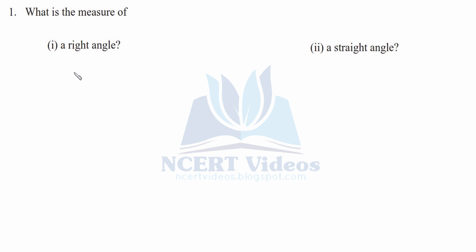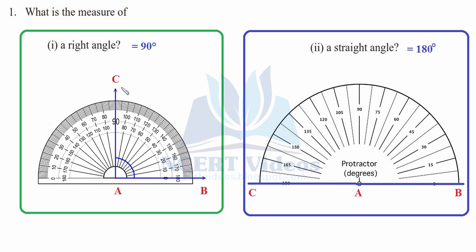First, what is the measure of a right angle, and second, what is a straight angle? You can measure it with the help of a protractor. From our previous knowledge, a right angle is one-fourth of a revolution, measuring 90 degrees. Therefore, a right angle equals 90 degrees. For a straight angle, we have straight edge CAB. Placing point A on the protractor and measuring AC, it turns out to be 180 degrees. Therefore a straight angle is 180 degrees.